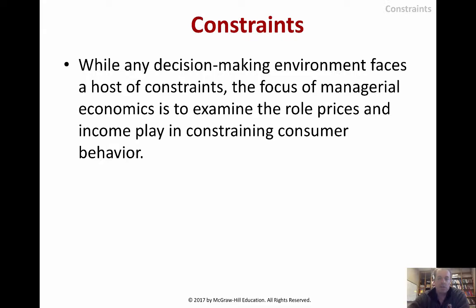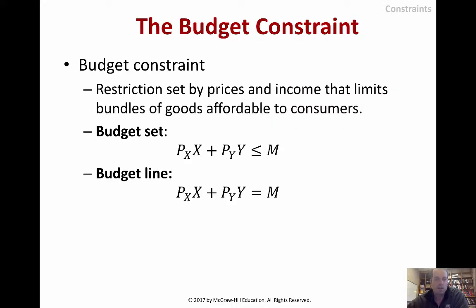So, constraints. The constraint in this case is going to be the budget constraint — there are also time constraints or legal constraints, but we're talking about budgets. The idea is if we have a total income of M, and in micro we only look at two goods, X and Y. We could look at one good X, and then Y is everything else with some kind of average price.